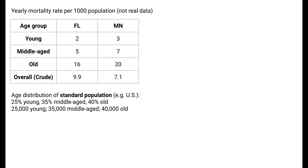To do this, we first need to identify the age distribution of a standard population. We'll assume that both states have the age distribution of the standard population — in this way, differences in mortality between the states can't be due to age since we've made the age distributions identical. There are many different choices for a standard population. Let's use the United States population as the standard population, which has an age distribution of 25%, 35%, and 40% for young, middle-aged, and old. To make units clear, we'll say the total U.S. population size is 100,000, though we only need the percentages rather than the actual counts in each age category.